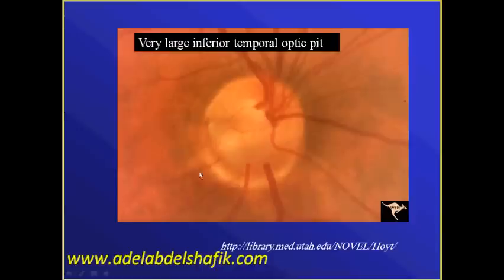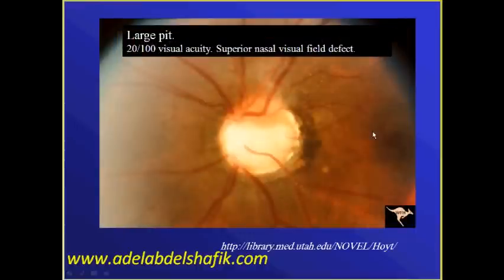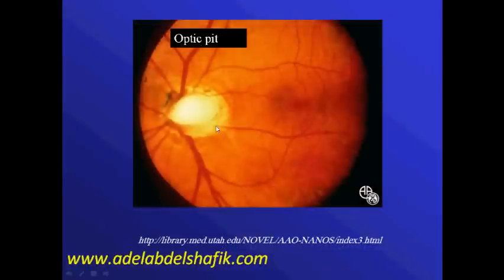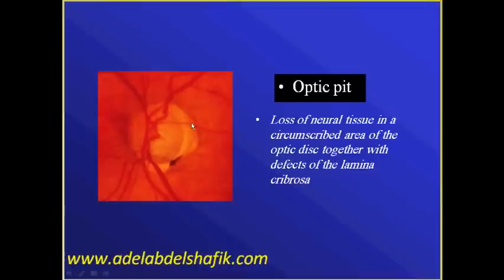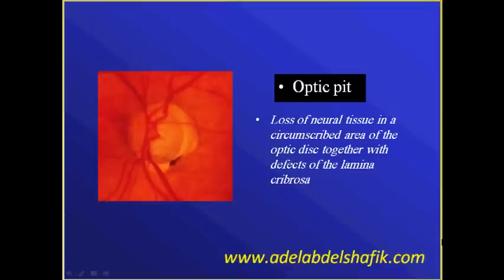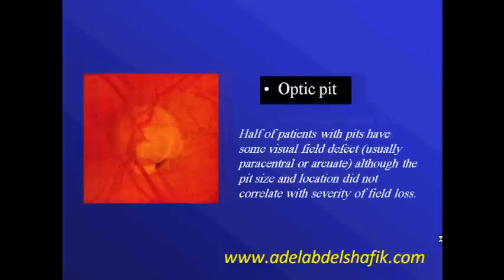You can notice here a huge cup. Another example shows a huge inferior cupping, and this case has a superior nasal visual field affection as well. A third example with cupping including the inferior parts. Optic pit is due to loss of neural tissues in a circumscribed area of the optic disc, together with a defect in the lamina cribrosa. Half of patients with optic pits have some visual field defects, usually paracentral or arcuate.